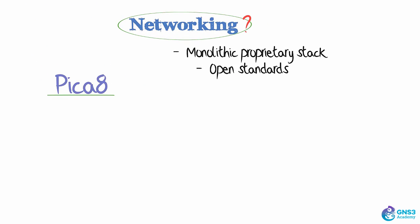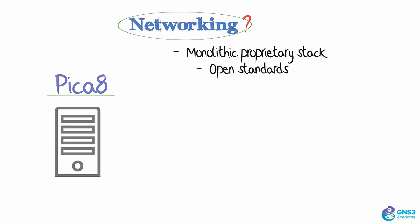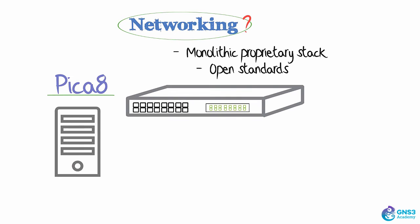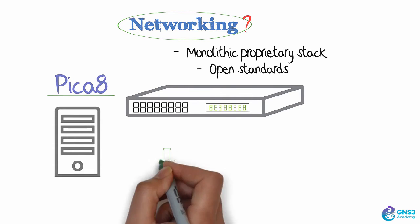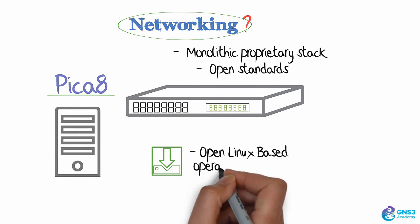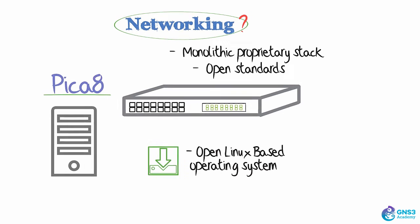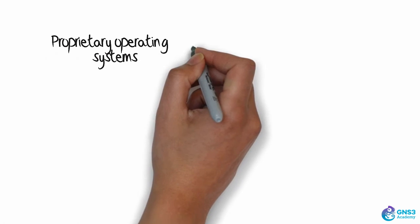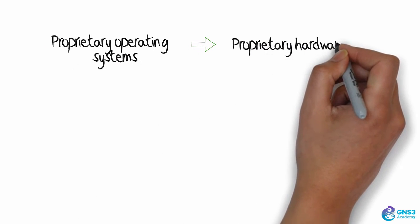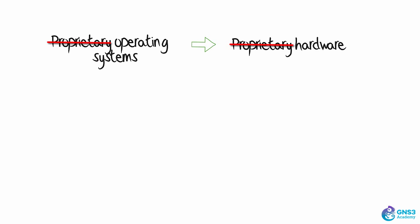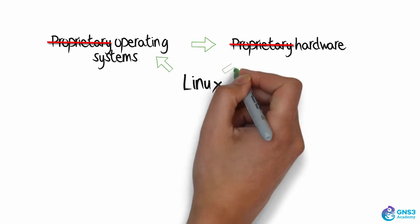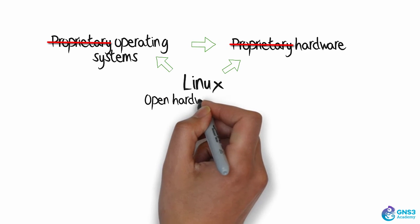With Pika 8 you can do that. In the same way as you can buy white box servers, these days you can buy white box switches from various vendors, and then install an open Linux-based operating system on those switches. There's no need today to run proprietary operating systems on proprietary hardware. There's a trend in networking today to run open operating systems using Linux and even using open hardware stacks.